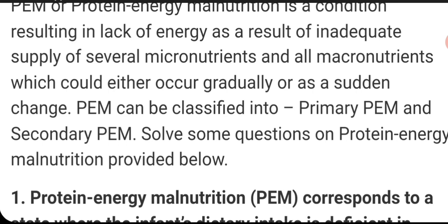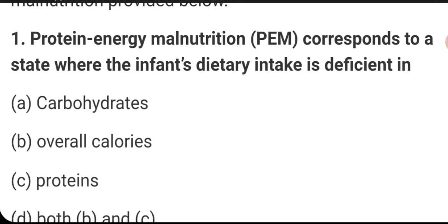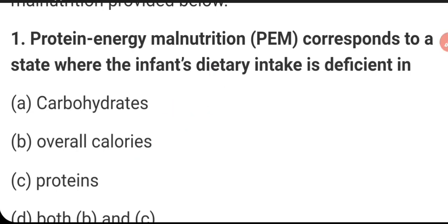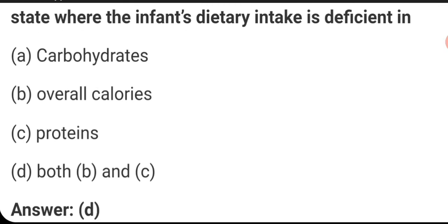MCQ: Protein energy malnutrition corresponds to a state where the infant's dietary intake is deficient in what? It is deficient in both overall calories and proteins. Carbohydrate is also supplied in less quantity, but overall calories and proteins are not supplied completely — they are supplied in deficient amounts. So the right answer is B and C.